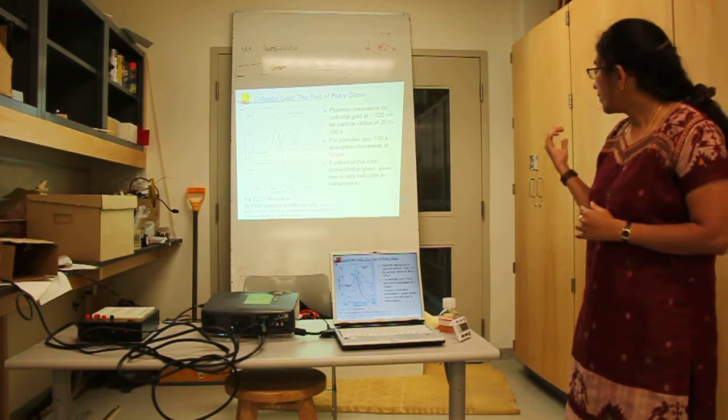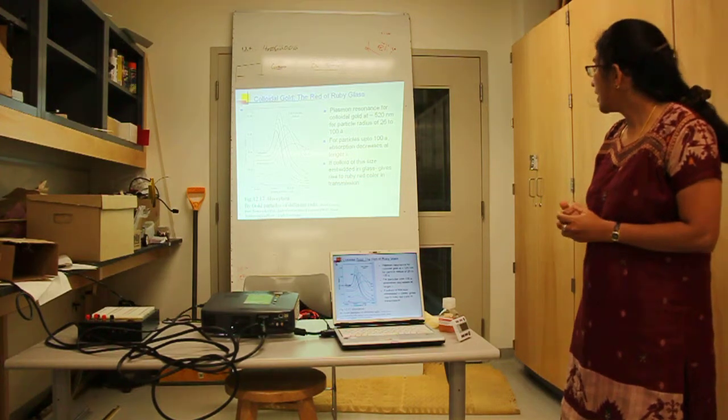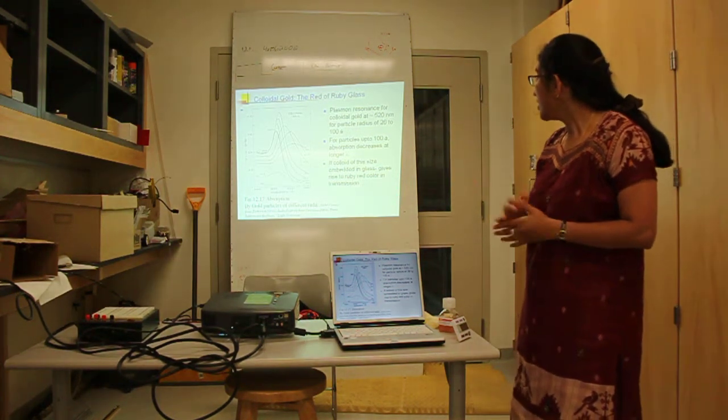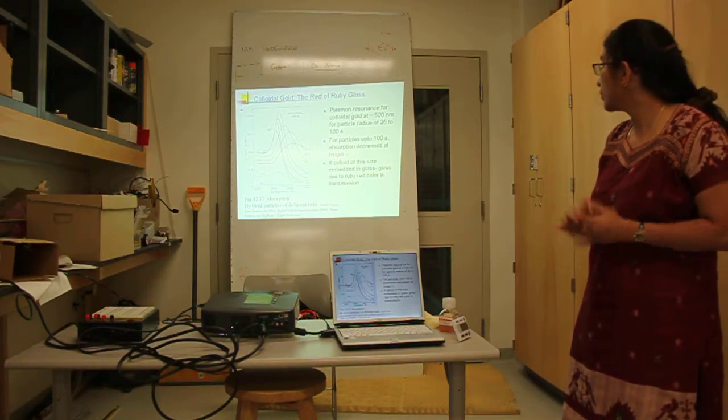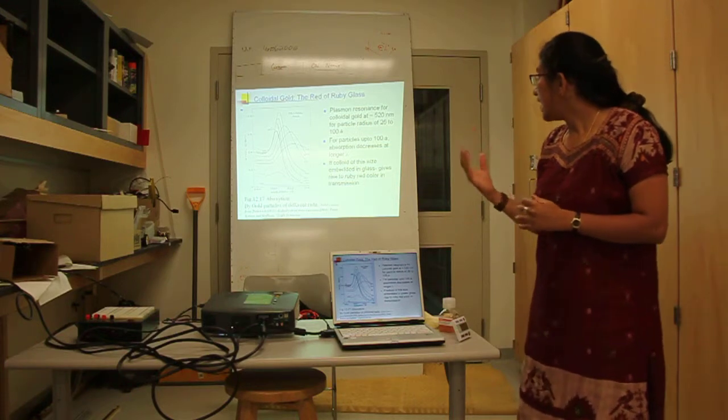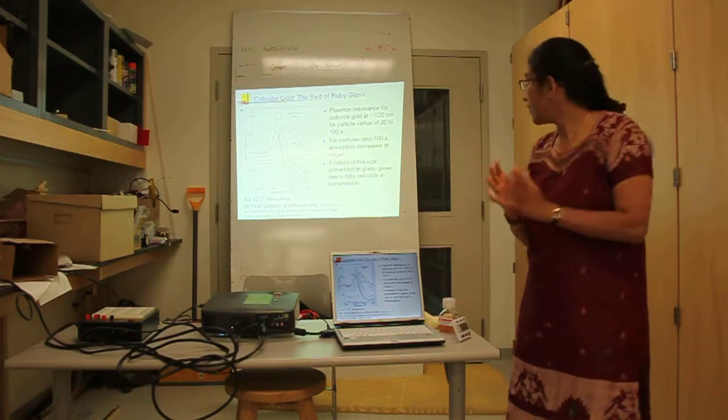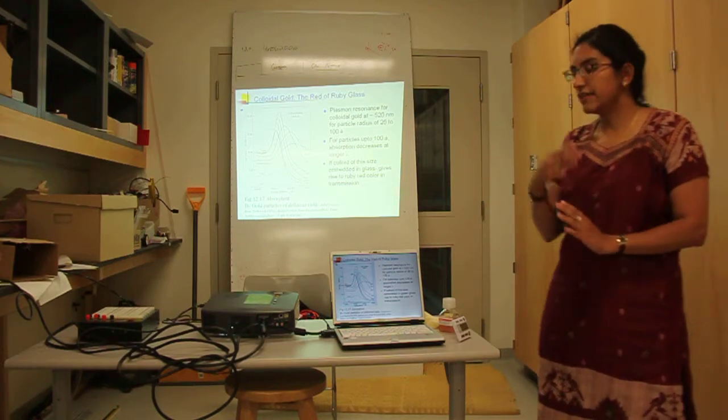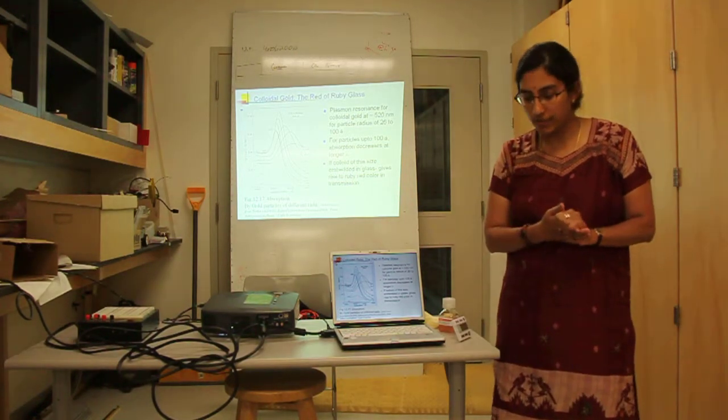So, for this type of colloid gold, which has a particle radius from 26 to 100 angstroms, which is 2.6 to 10 nanometers, they have an optical resonance at 520 nanometers. And if you embed this in glass, then it gives rise to the ruby-red color in transmission.